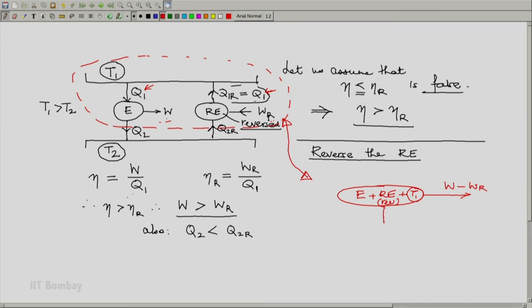It absorbs heat from the low temperature reservoir which is at T2. And the amount of heat absorbed is Q2R from the reverse reversible engine minus the one rejected by engine E, Q2. So the heat absorbed will be Q2R minus Q2.